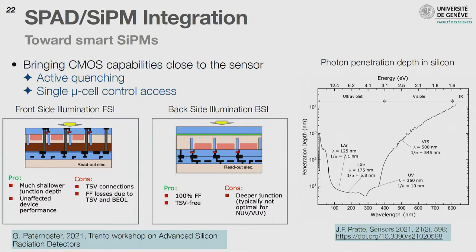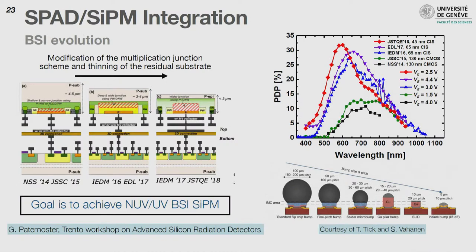Electronics integration means bringing CMOS capabilities really close to the sensor. This enables active quenching — great for timing and for after-pulses — and single microcell control. There are several approaches: front-side illumination (FSI), where the anode signal must be routed to the back through silicon vias, which costs fill factor. The ideal approach is back-side illumination (BSI), where you flip the SiPM and connect the anode directly to the readout chip, achieving 100% fill factor — though UV sensitivity is lost since UV photons are absorbed very early.